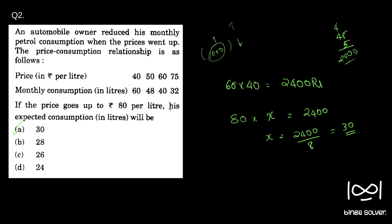In case this was not the relationship, we would need to find some other relationship — like if price increased by 10%, is he reducing by 10% or something else. But here the relationship was straightforward: it is a common idea that his spending allocation — the constant amount he spends for petrol — remains fixed. That is the solution to Question 2.